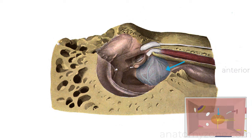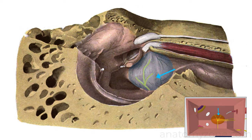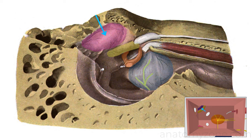Here we see the promontory formed by the bone overlying the basal turn of the cochlea, with the tympanic plexus and tympanic nerve. The stapes has been left in situ, covering the oval window. Posterosuperiorly on the lateral wall, we see the prominence of the facial canal, and the prominence of the lateral semicircular canal just above it. Anteriorly, we have the tensor tympani muscle within its bony canal, just above the eustachian tube which you can see here.